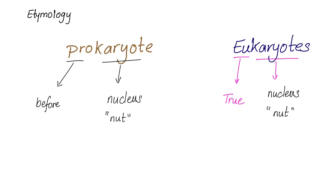Prokaryote means before nucleus. Eukaryote — eu means true, karyote means nucleus. Karyote also means nut; the nucleus is basically a nut. So, like normal people say he went crazy, he went nuts — but biology students should say he went karyote. I hate myself.